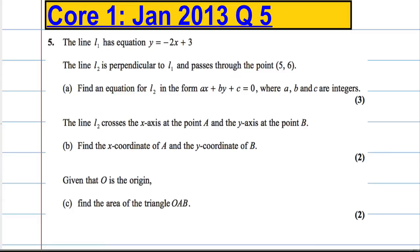So part A, we're asked to find an equation for L2 in the form ax plus by plus c equals 0 where a, b and c are integers. There's a couple of things we need to note here. In order to write the equation of a line, we're going to need to use the formula y minus y1 equals m times x minus x1. In other words, we're going to need the gradient of the line and a point on the line.